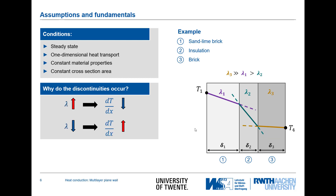The discontinuity occurs because, in addition to the heat fluxes being constant, there is also a change in material properties. Fourier's law can only hold if, when the thermal conductivity increases, the temperature gradient decreases in the same manner. Where thermal conductivity is very high, the slope is low; where thermal conductivity is lower, the slope is higher. Directly at the crossover between two different materials there is a discontinuity in material properties, and as such there is also a discontinuity in the temperature profile.